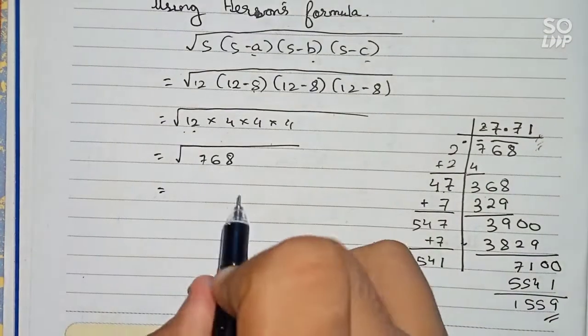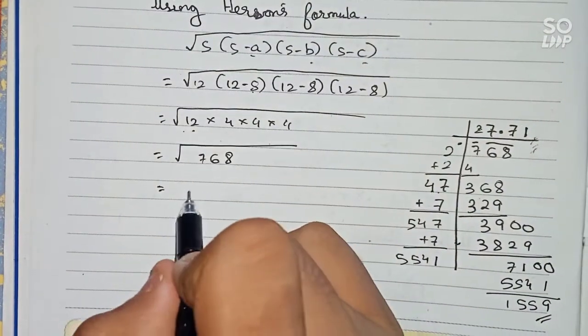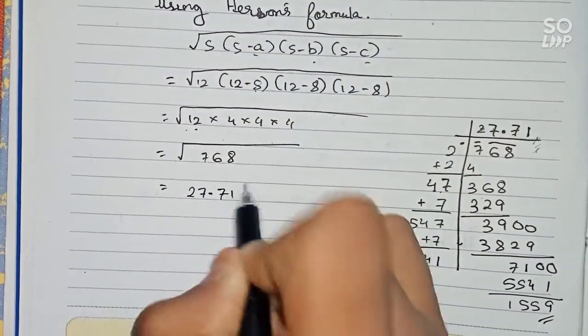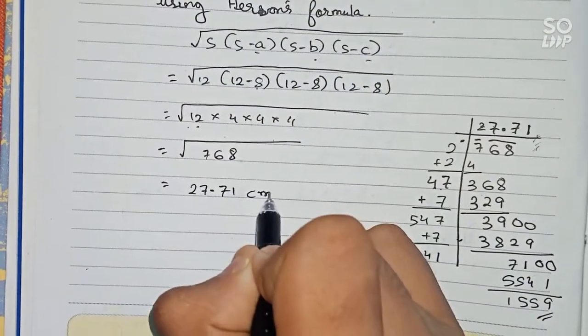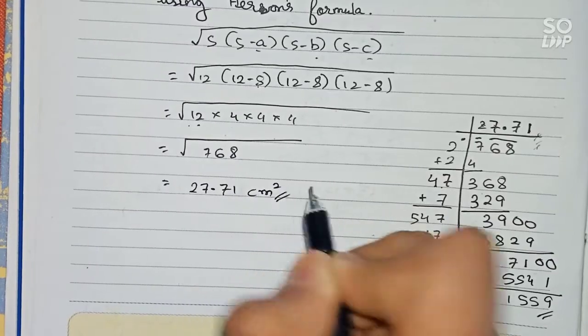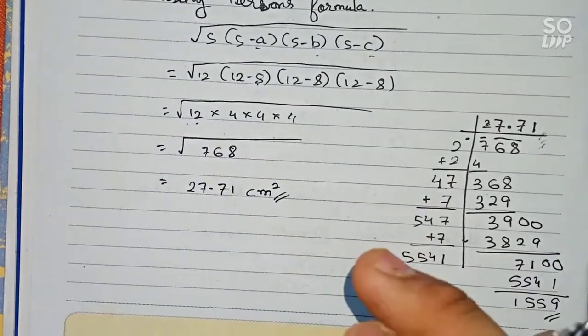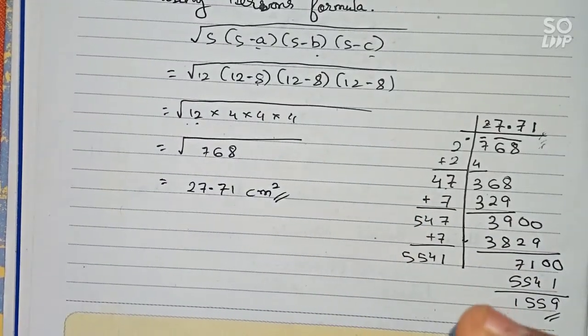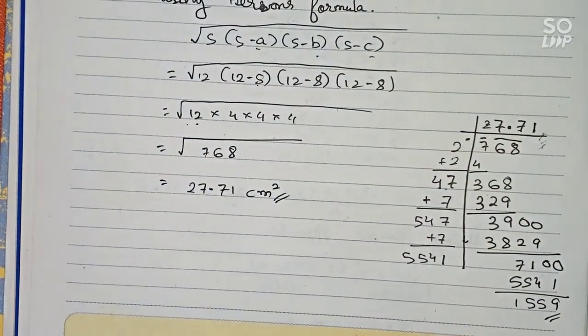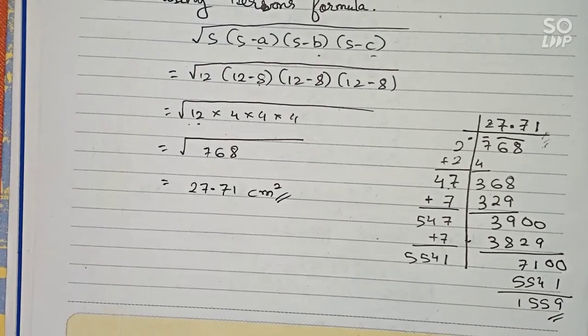So we have got the answer correct to two decimal places, that is 27.71. So 27.71 centimeter square will be the area for this equilateral triangle.